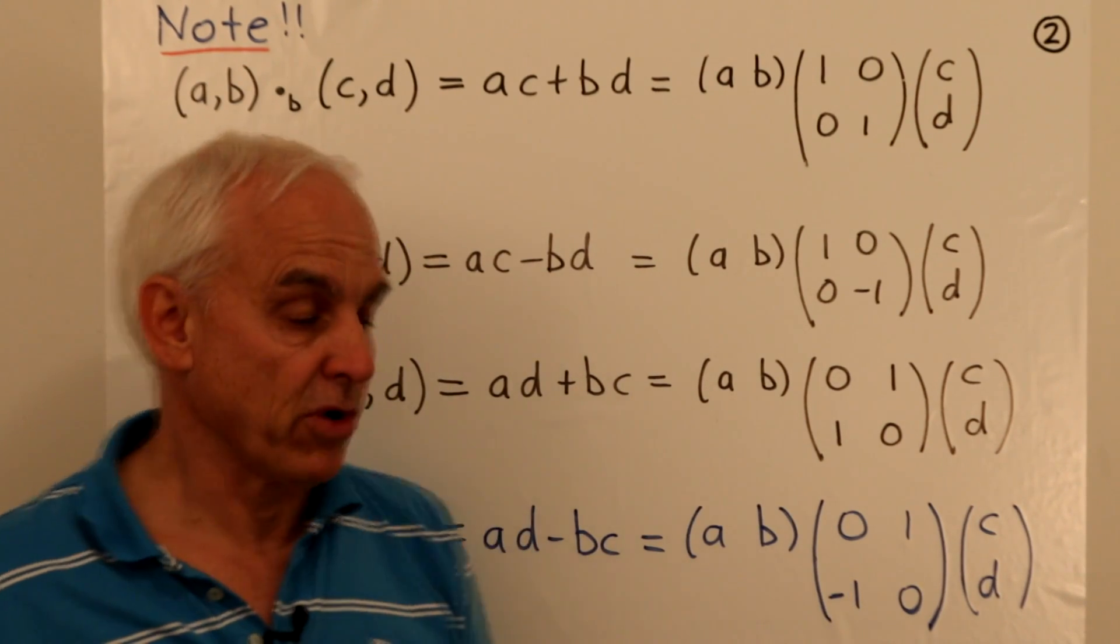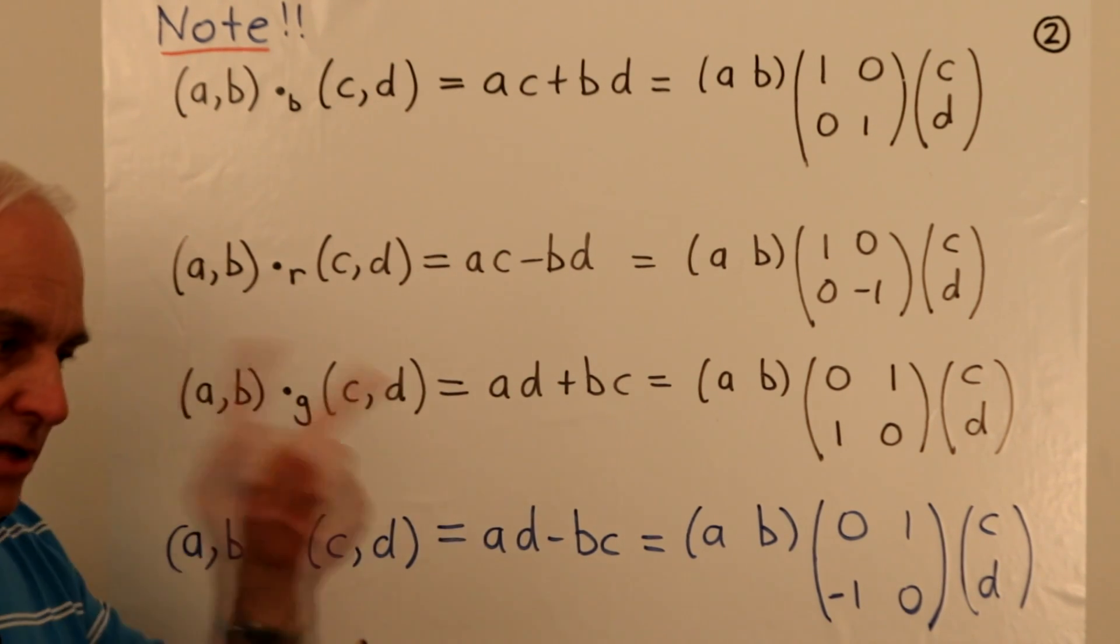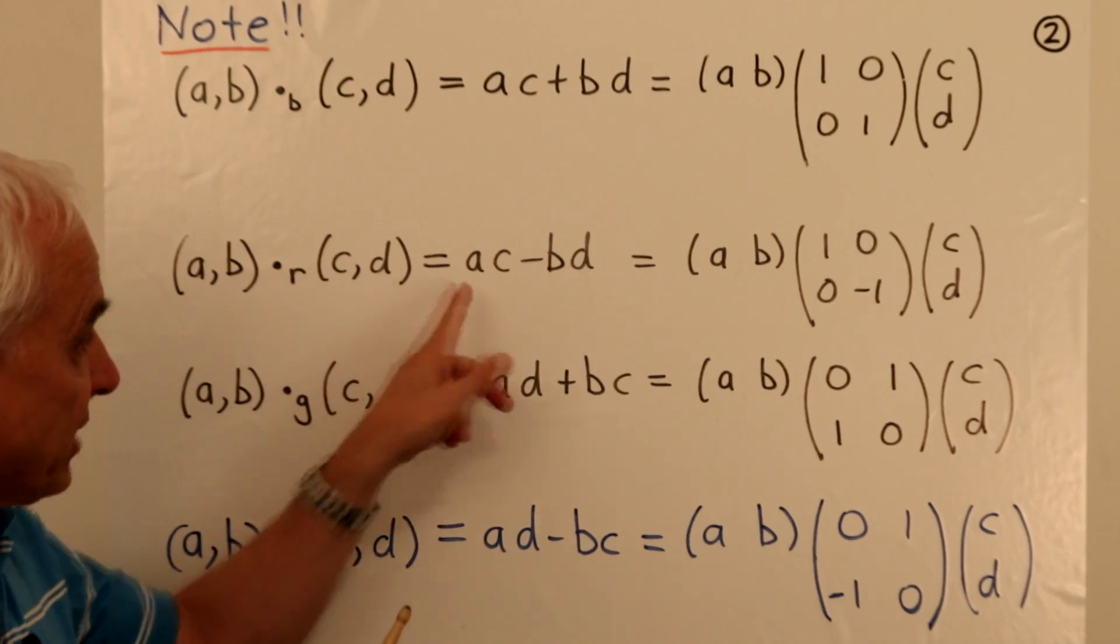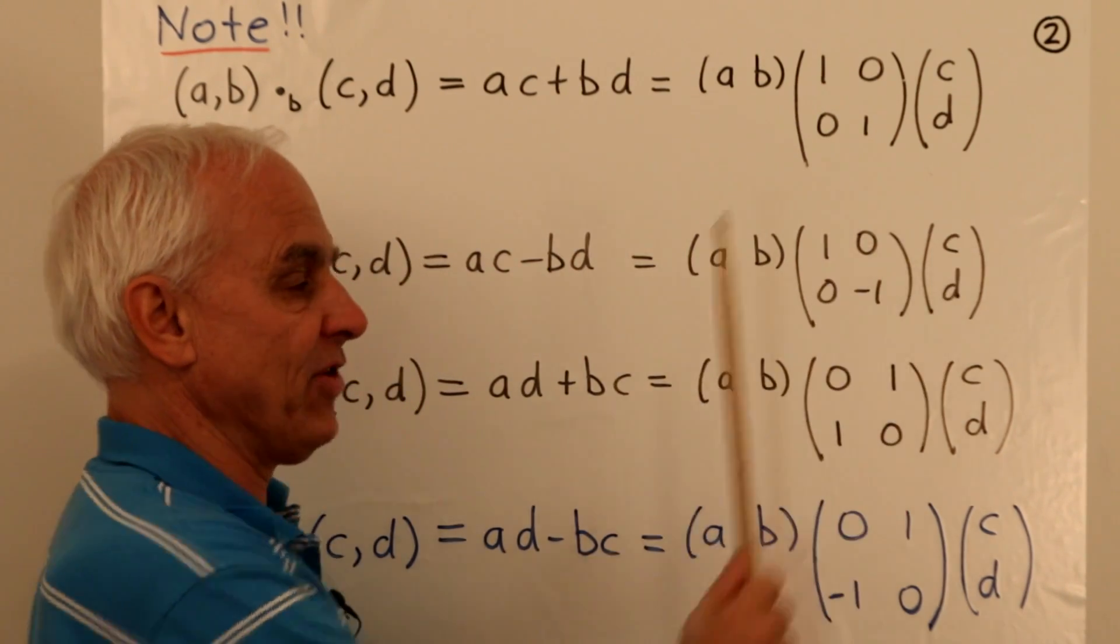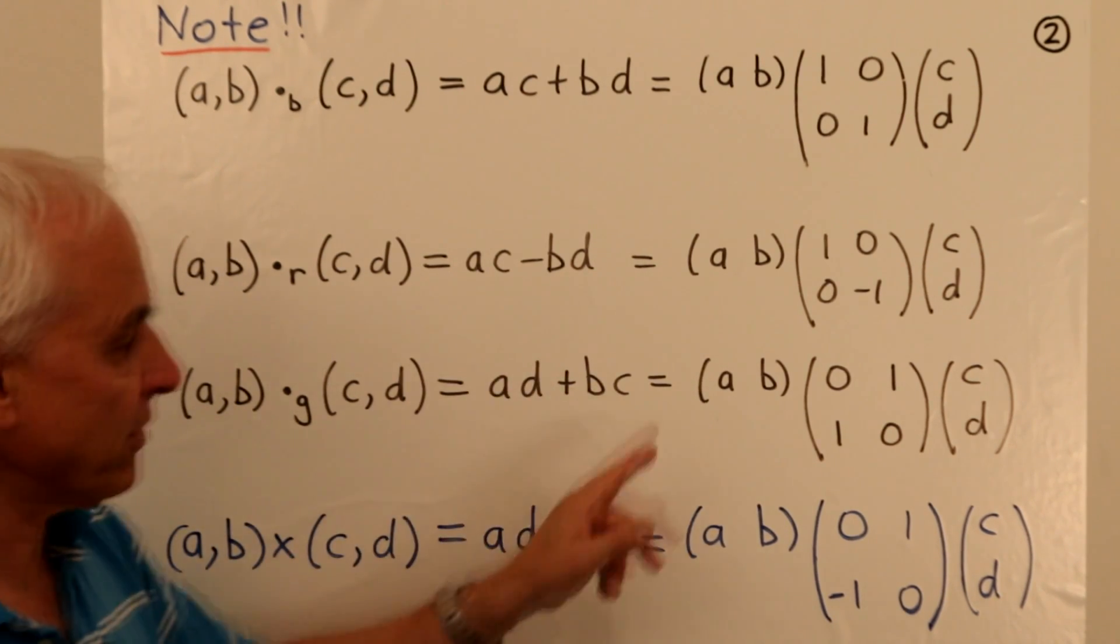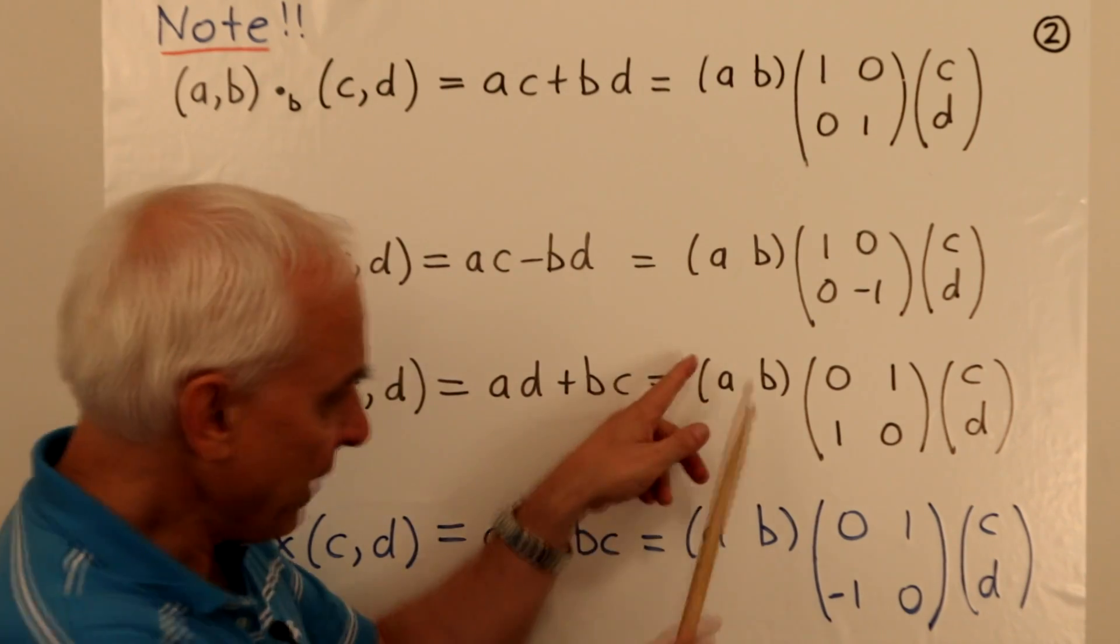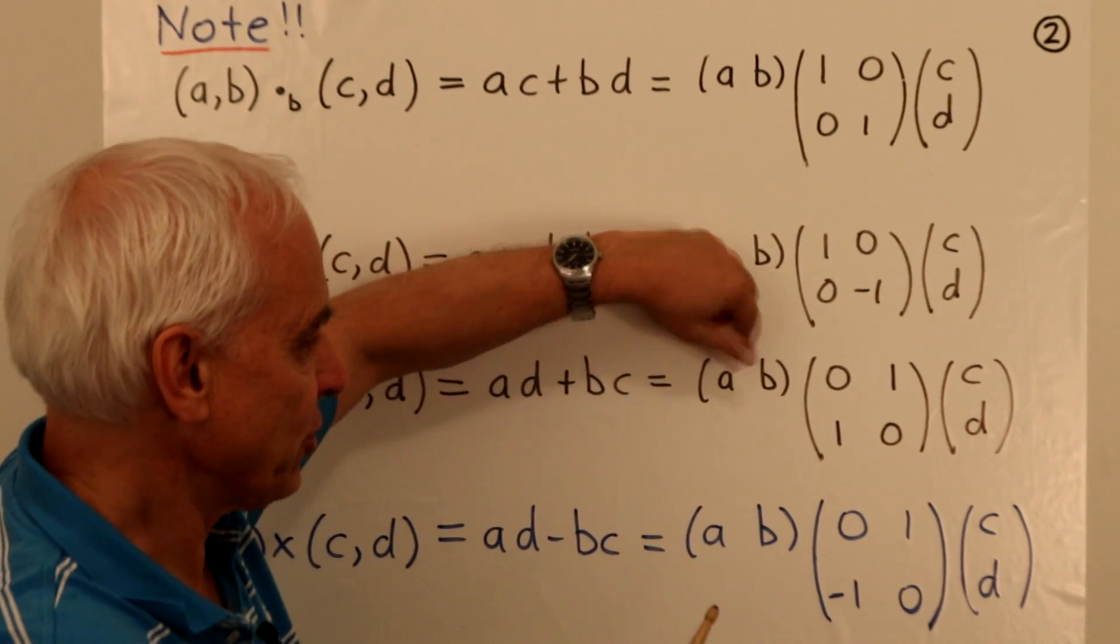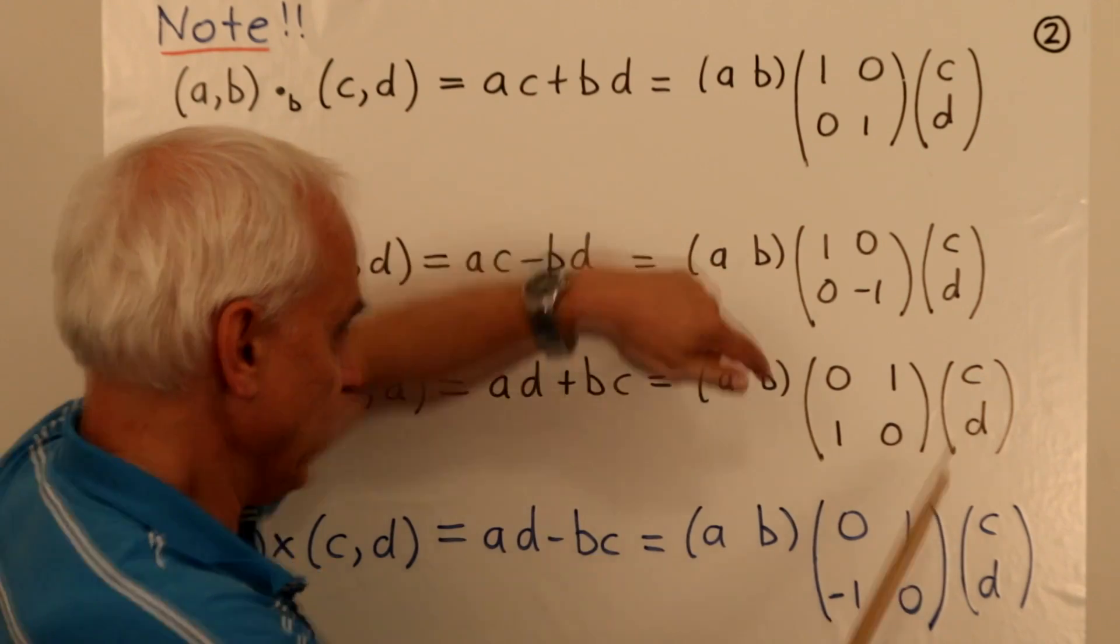The red dot product—notice we have a little dot with an r now—is ac - bd, the product of (a,b) times the matrix [1,0; 0,-1] times (c,d). You can check that works out. The green one is ad + bc, the product of (a,b) times this matrix [0,1; 1,0] times (c,d). Notice if we take this vector and multiply by [0,1; 1,0], the effect is just to interchange the order, so this is like taking (b,a) times (c,d), which gives bc + ad, the same thing.